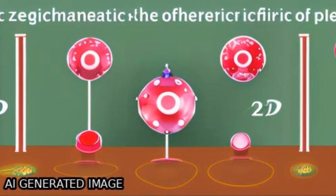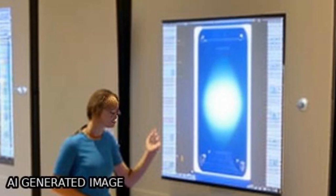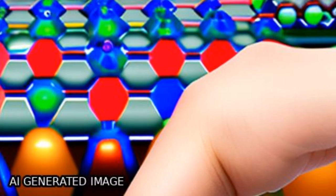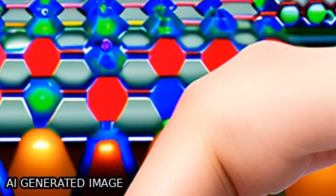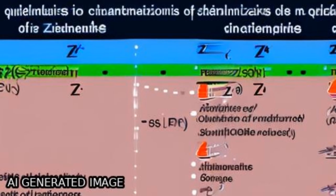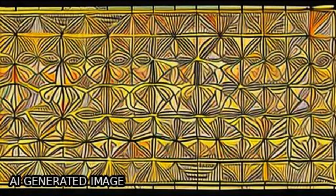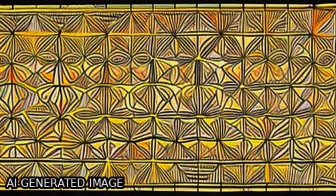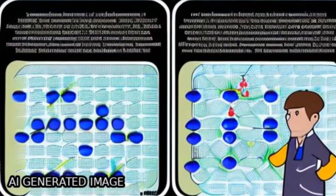This study defines a quantized many-body charge polarization for 2+1D topological phases of matter, even in the presence of non-zero Chern number and magnetic field.